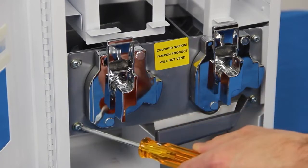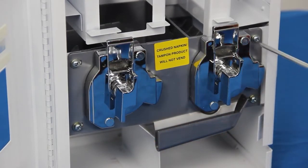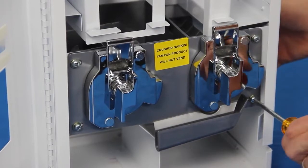Next, unscrew the four Phillips screws in the corners of the vending console. Keep the washers with the screws after removal.